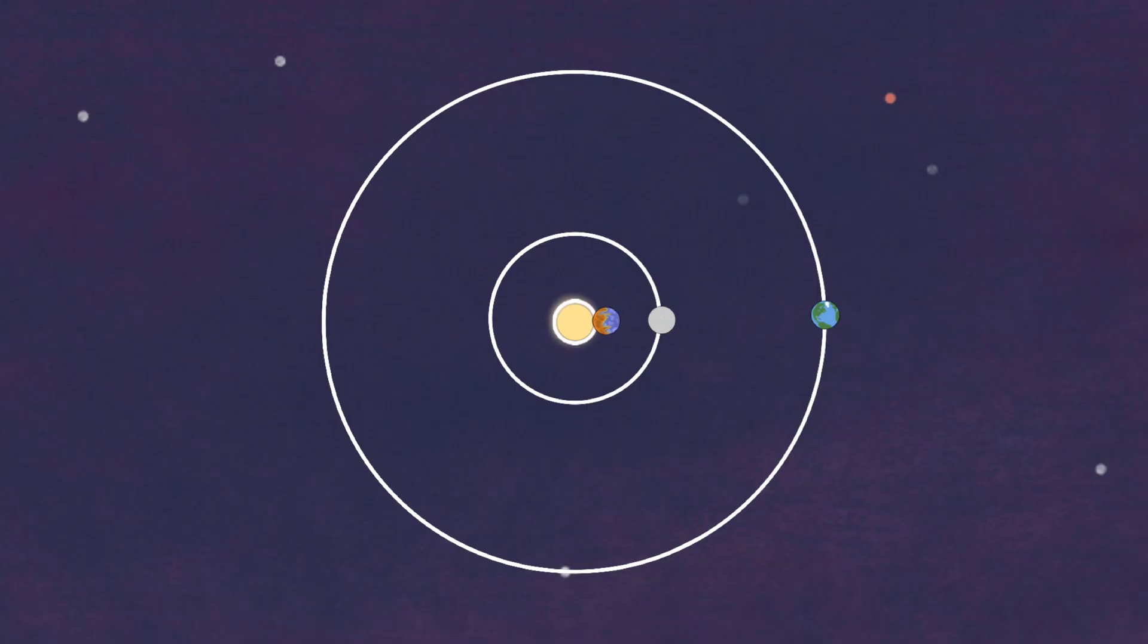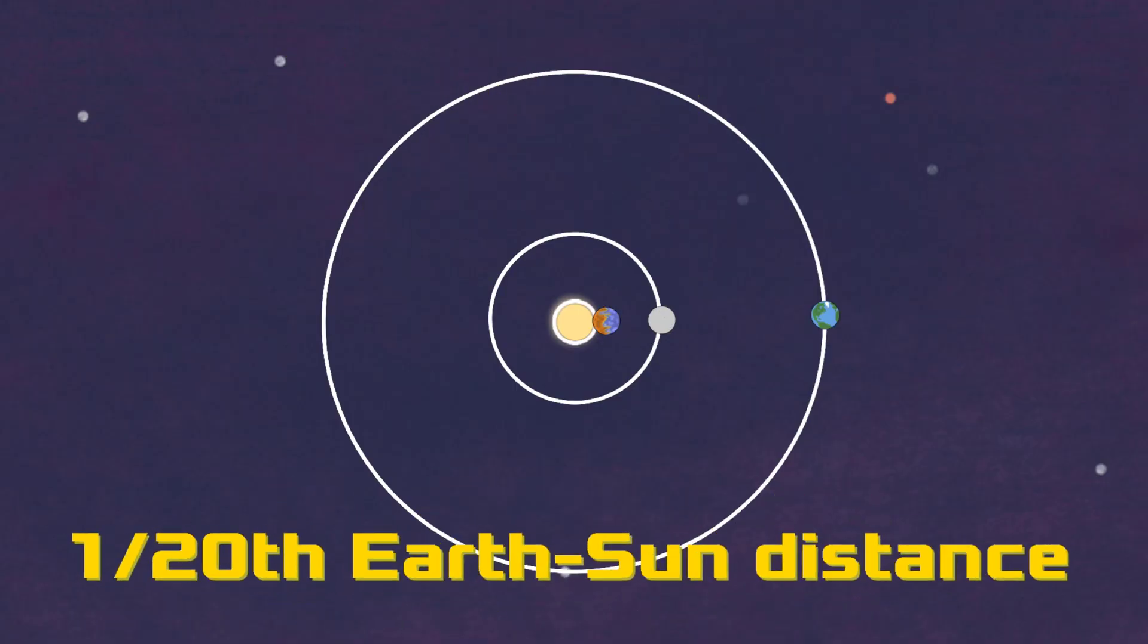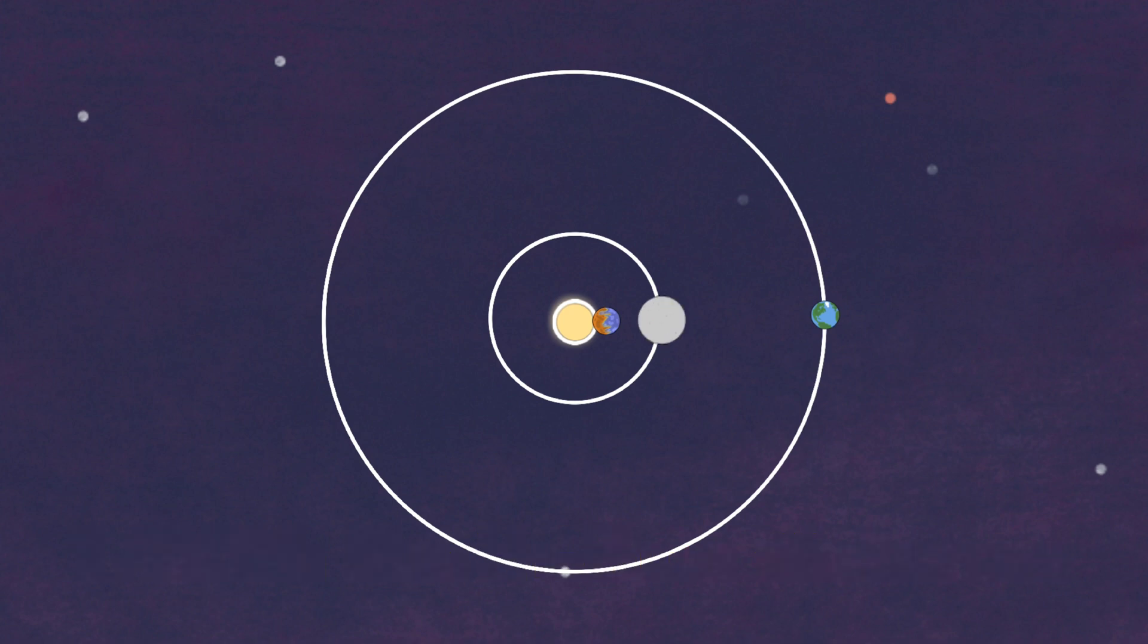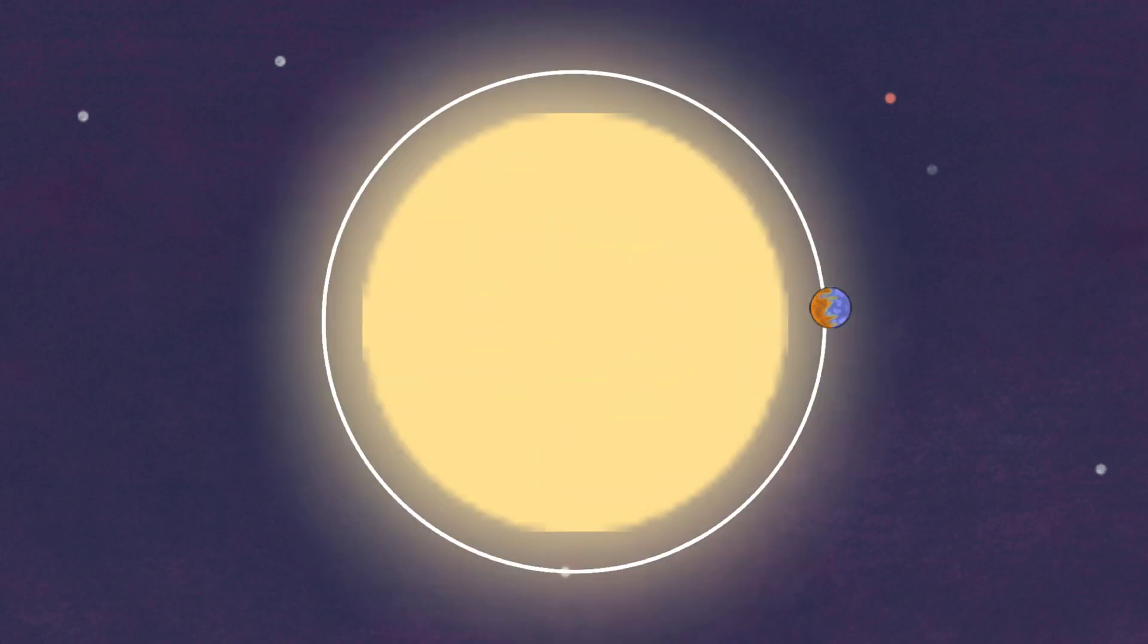HD orbits its star at around 0.05 AU or 1/20th the distance from the earth to the sun, which is horrendously close, as Mercury's distance is only 1/3rd the distance of earth and the sun. And the distance gives the planet a 4 day orbital cycle.